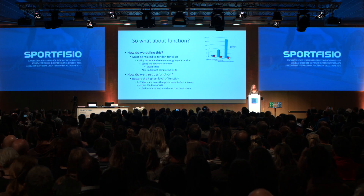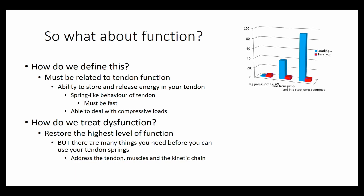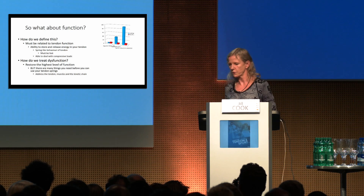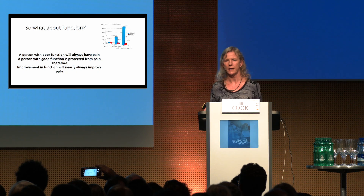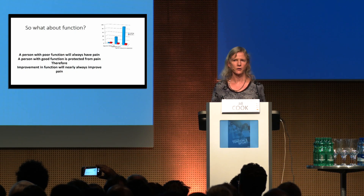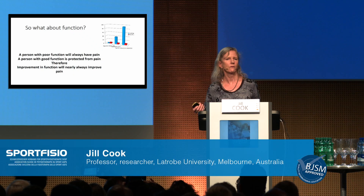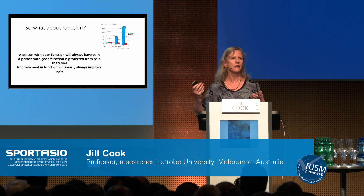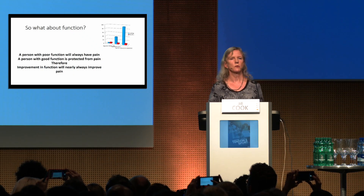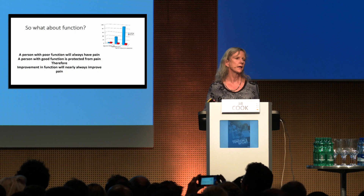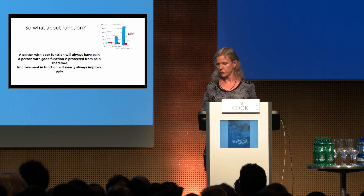We need to restore the tendon back to the highest level of function that we can — but we can't just concentrate on the tendon. We have to concentrate on the muscle attached to the tendon, restore function in the kinetic chain, and also restore brain function. A person who has poor function will nearly always have persistent tendon pain. If we restore function, we will get rid of that person's pain. We restore function by progressively loading a tendon with exercise and ensuring we get the right loads on the tendon.